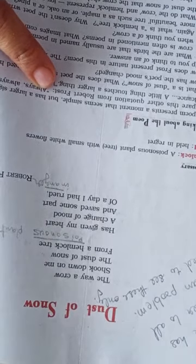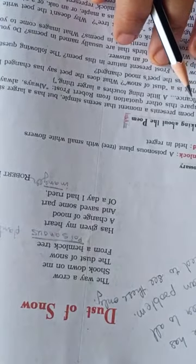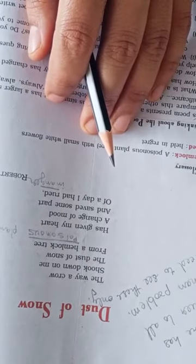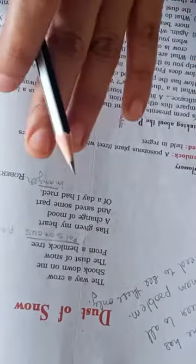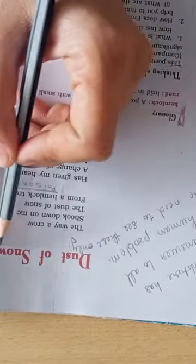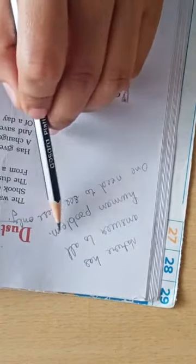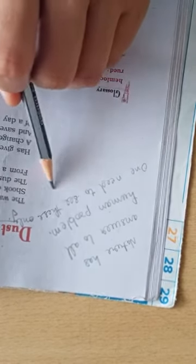So today we will begin with Dust of Snow by Robert Frost. Dust of Snow is a short poem related to how the poet was feeling upset during half part of the day, and after half of the day passed, suddenly his mood got changed. He started feeling happy and relaxed. And now Dust of Snow is something related to nature. One thing I can tell is that nature has answer to all human problems. One needs to see these only.